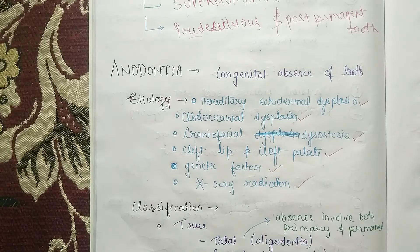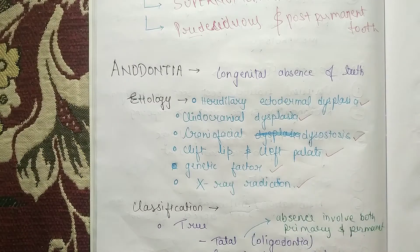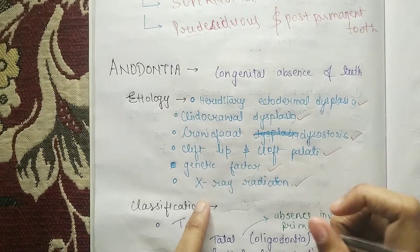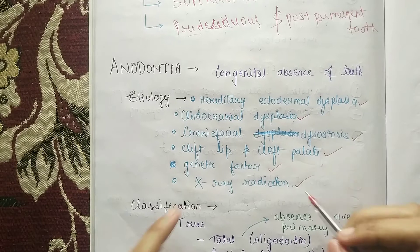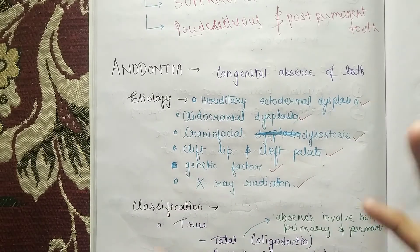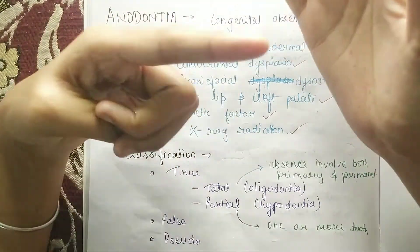Sometimes X-ray radiation is also a cause, because the tooth has rich blood supply, making it very sensitive. X-ray radiation can also cause cancer, so it is very dangerous. Now coming to the classification — there are three types.